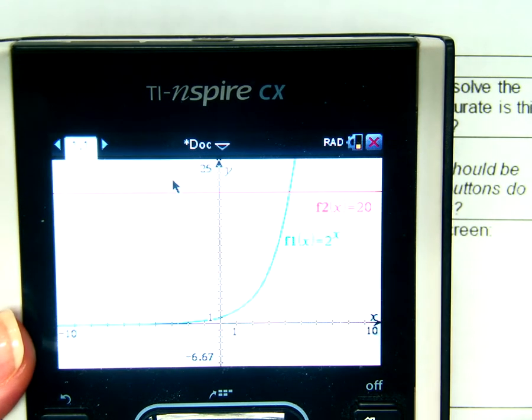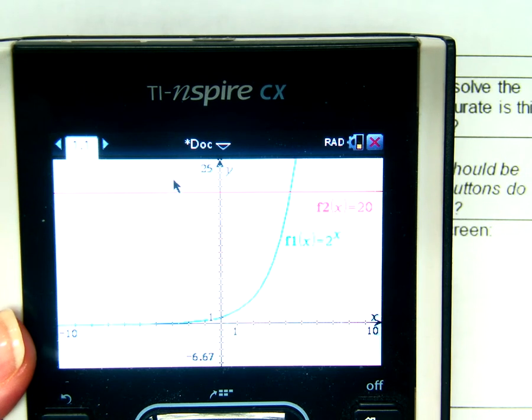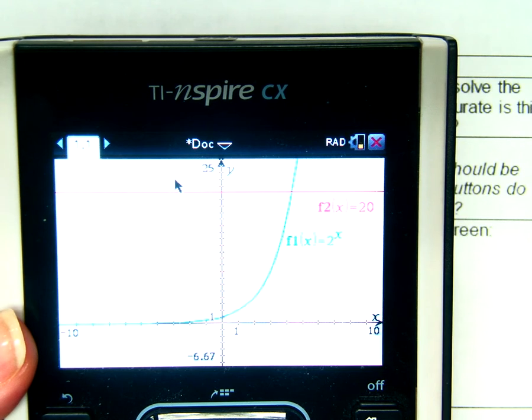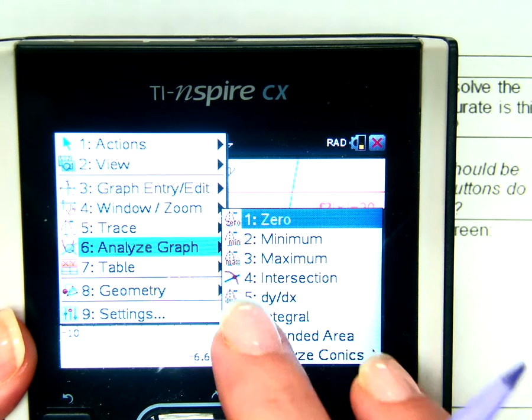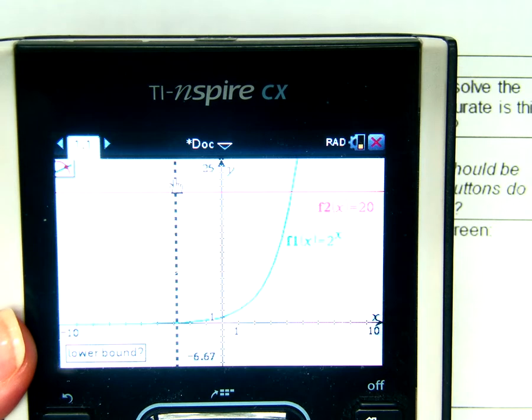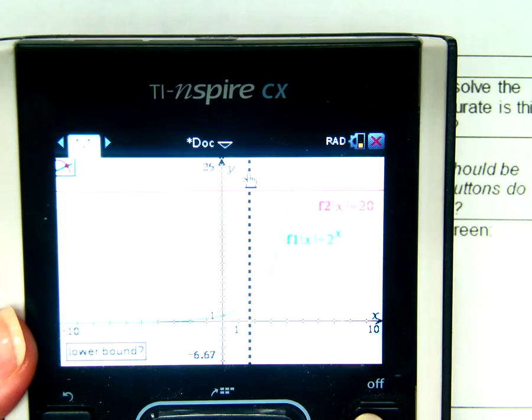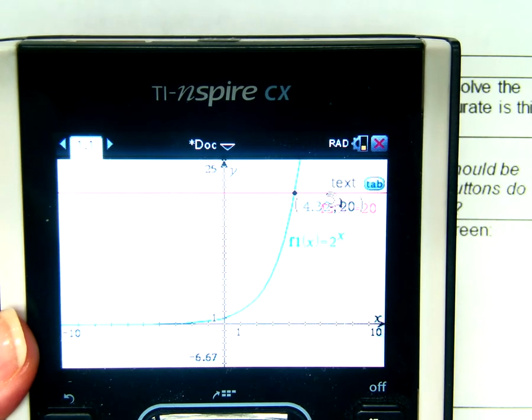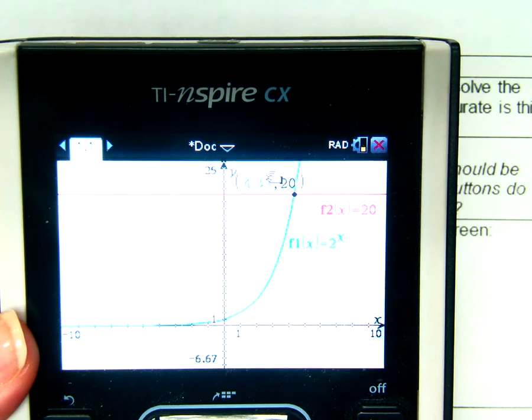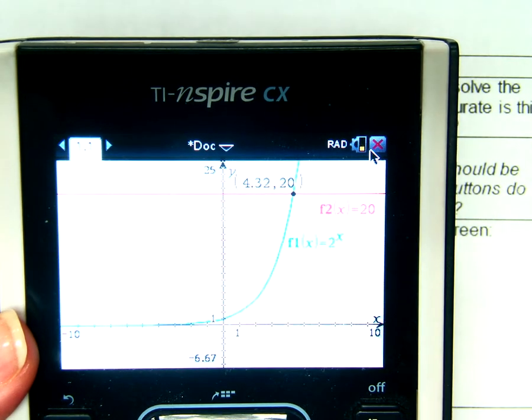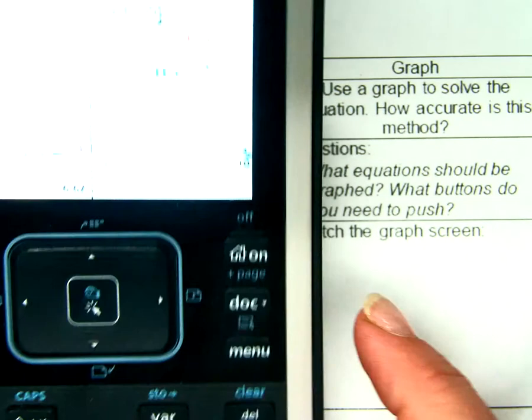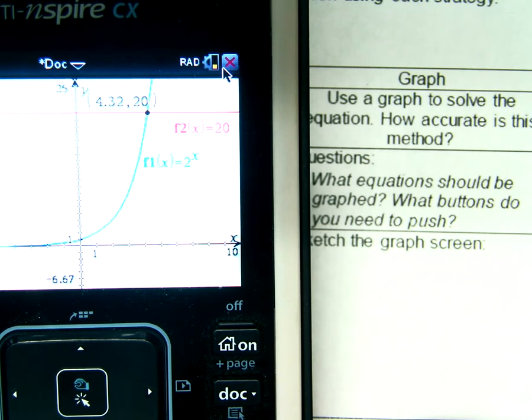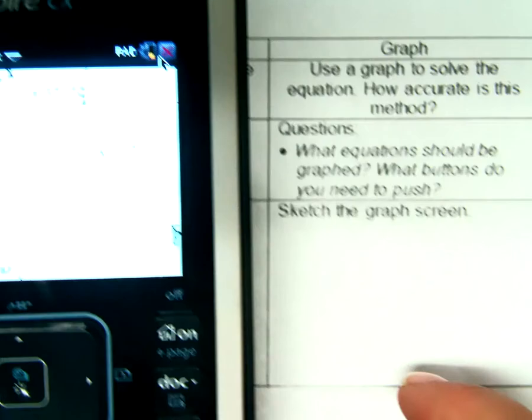Well, what can I do with those two lines then? If I'm trying to solve the equation 2 to the X power equals 20, I could find the intersection, right? That's very good. Menu, Analyze, Intersection. This should give us the exact answer, right? Right? Lower bound on the left side, upper bound on the right side. Well, we have a problem. I already know the answer is not 4.32 because of the table, except that's what it told me. What did it do? It rounded.